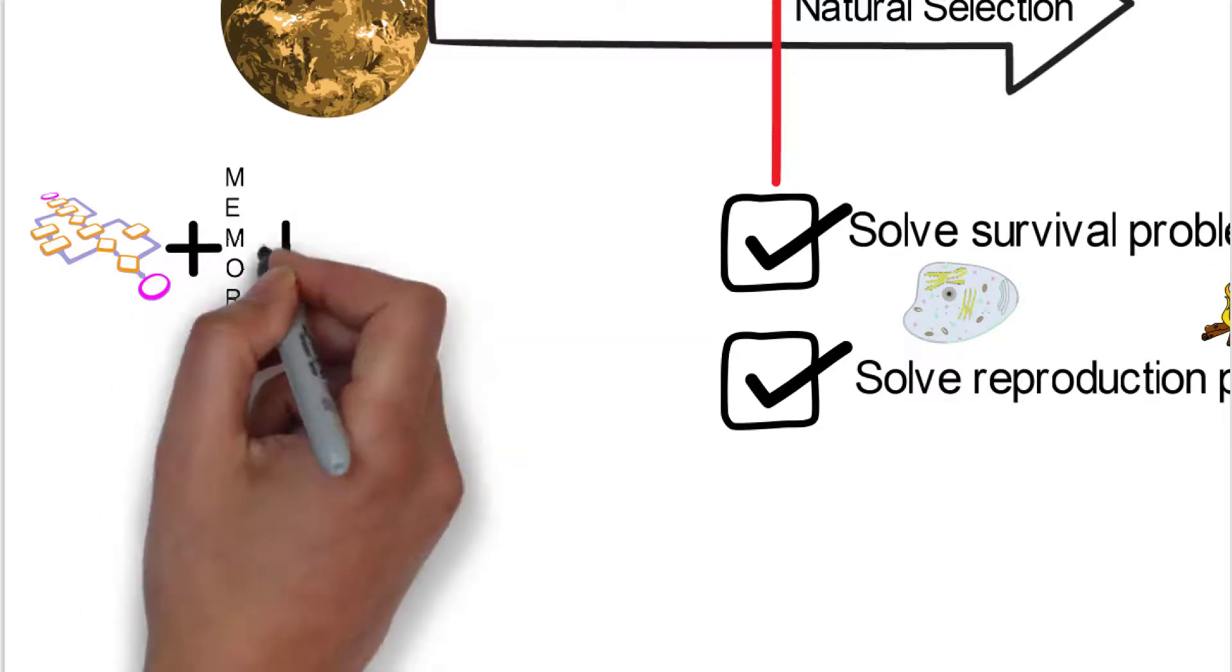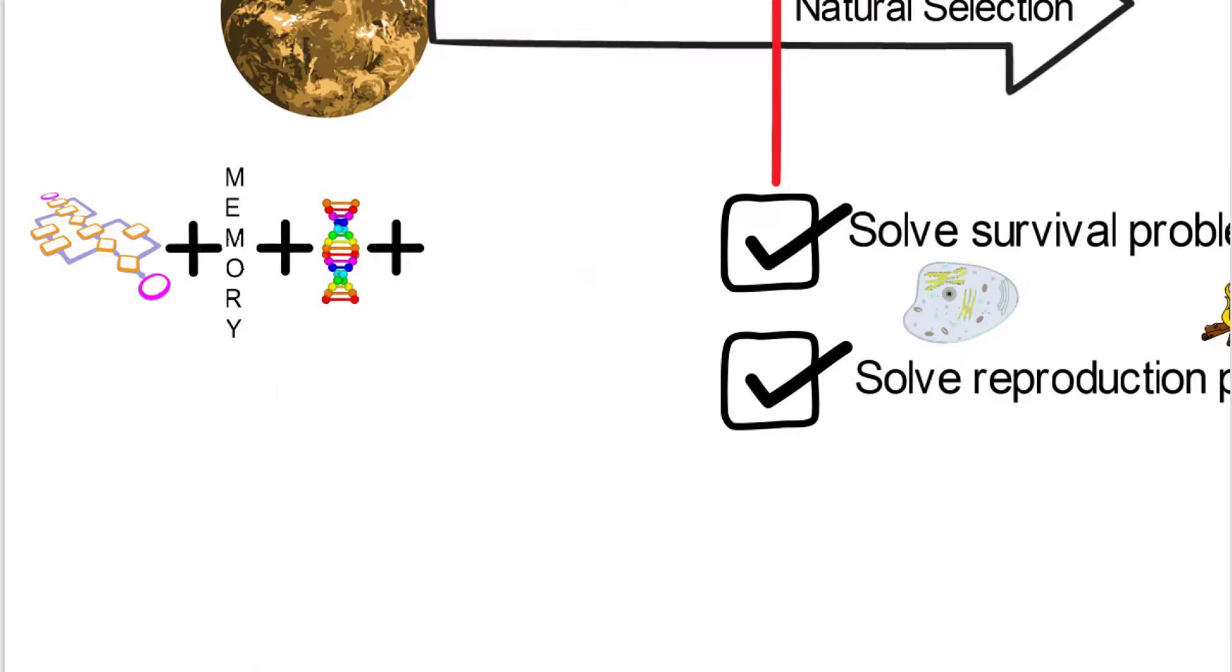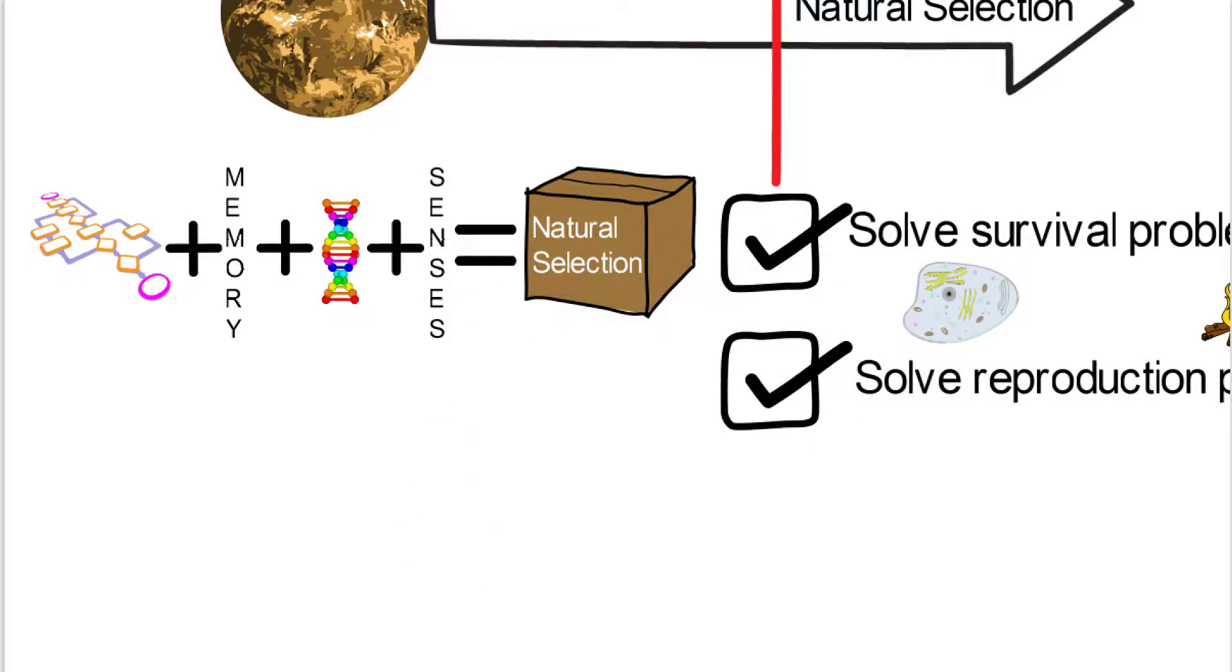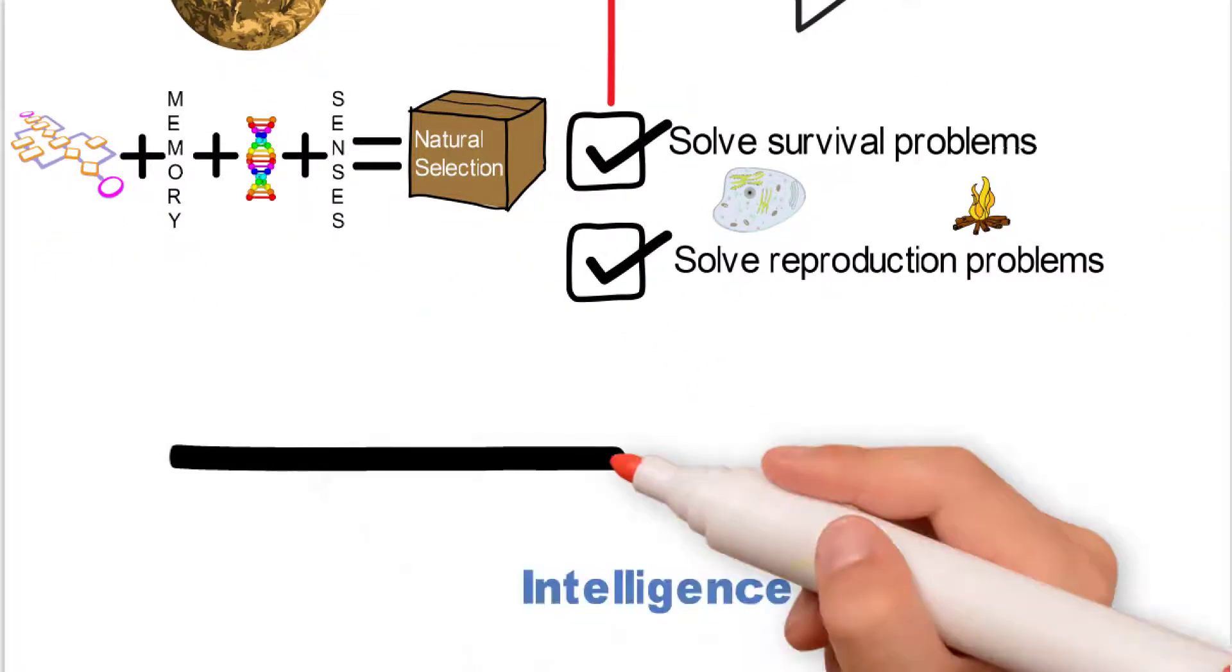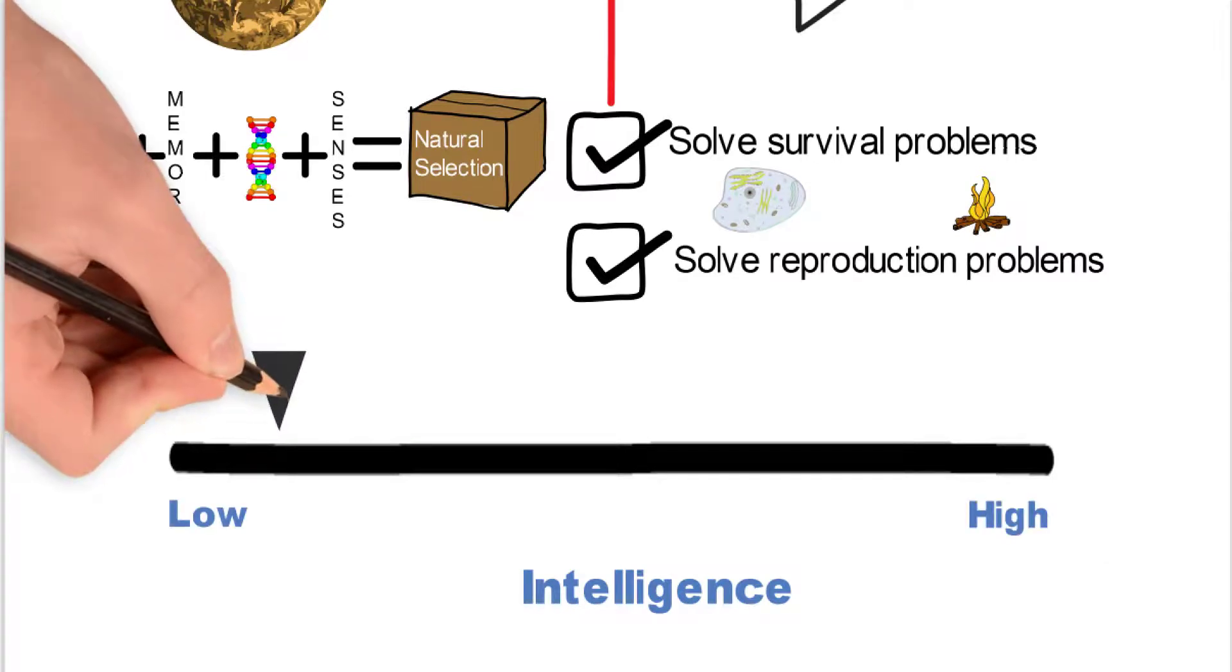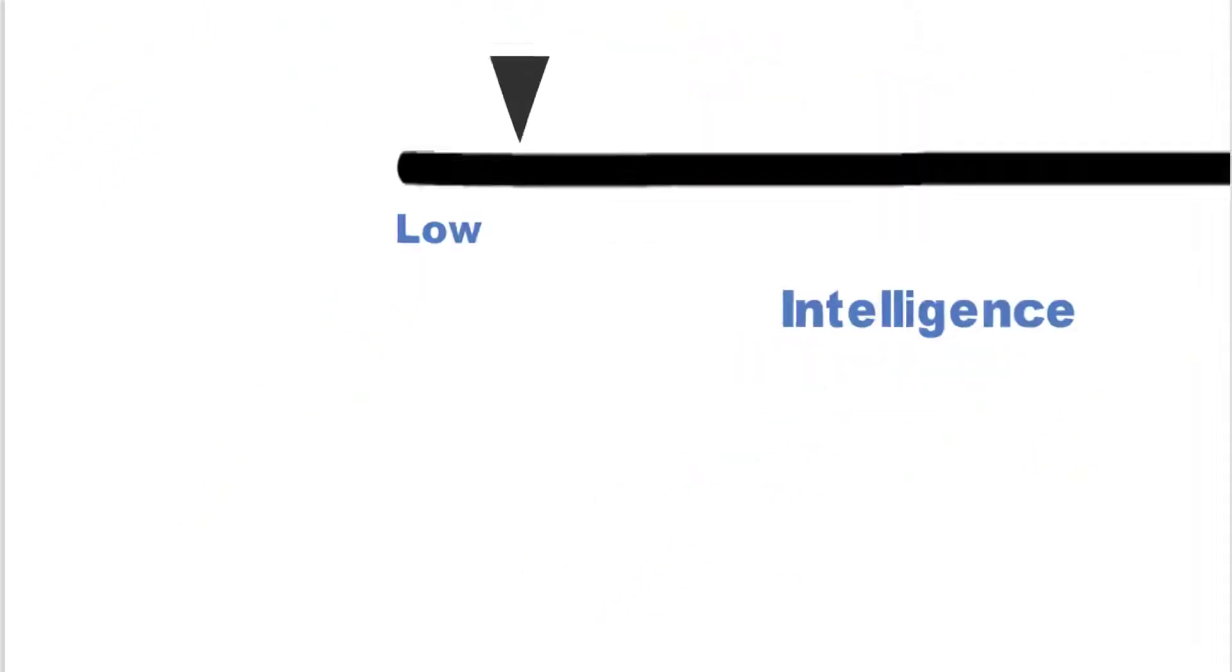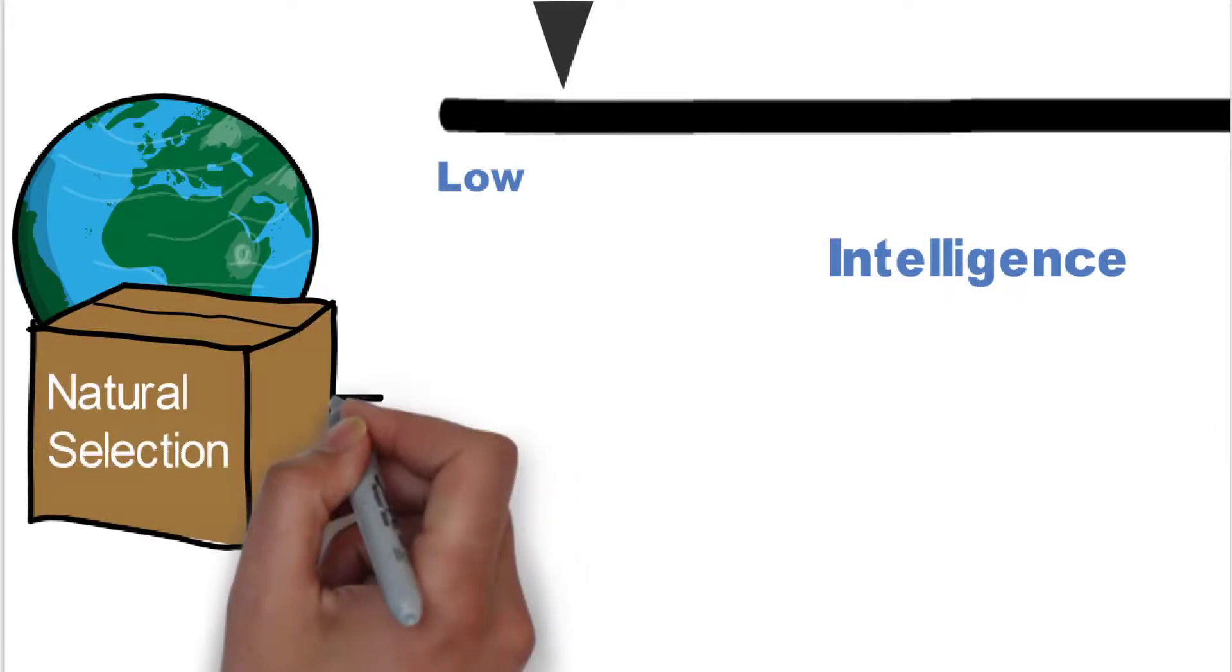Basically, the only way you can do that is if you link the ability to solve things, which is algorithms, with memory, and you add to that the DNA, which is the reproduction thing, and you add our senses. Altogether, those things together kind of put into a bundle of natural selection. The intelligence required in the early days, way in the beginning, were really very low. The survival problems and the reproduction problems, or at least the organisms themselves, just had a very low intelligence.